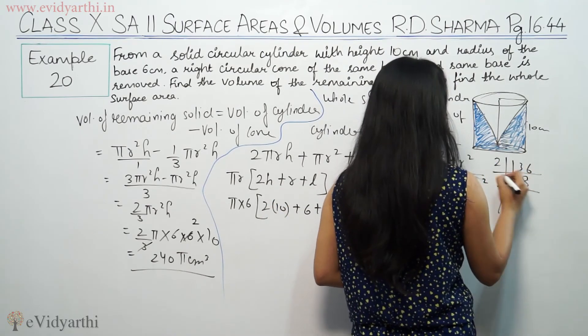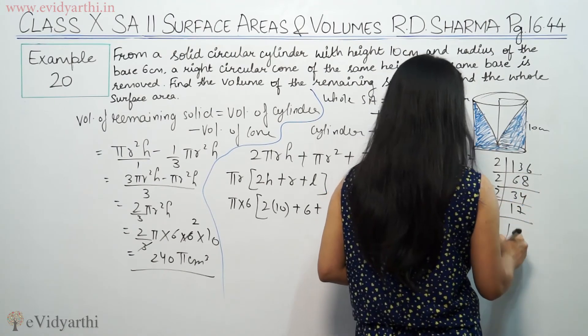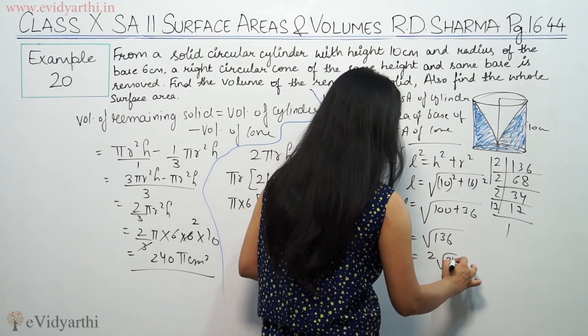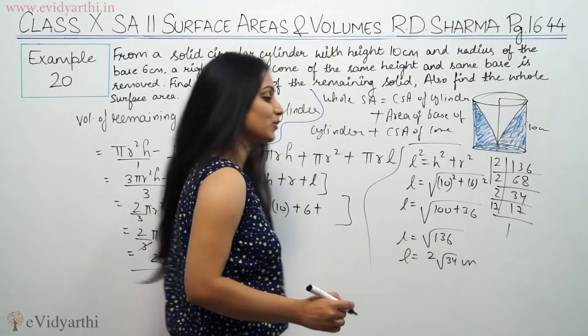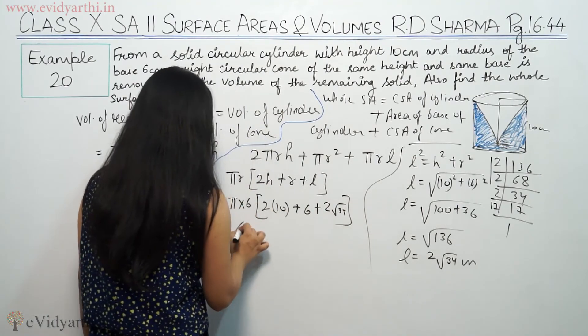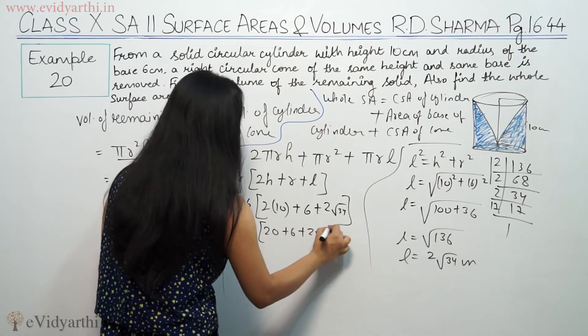Finding square root of 136: 2 times 68, 2 times 34, 2 times 17. So we get 2² times 34, giving us 2√34 as the slant height.